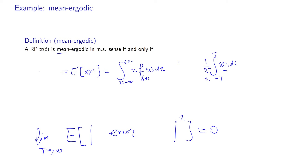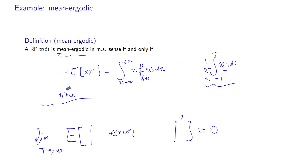If the mean is not stationary — if it varies with time — then for some time T you get one number and for another time T you get a different number, so averaging over time doesn't make sense. A part of being mean ergodic is useful only if the mean is time-invariant, meaning the mean of X of T equals the mean of X of T plus tau for all tau. So within the definition of ergodicity we should have stationarity in the mean sense.